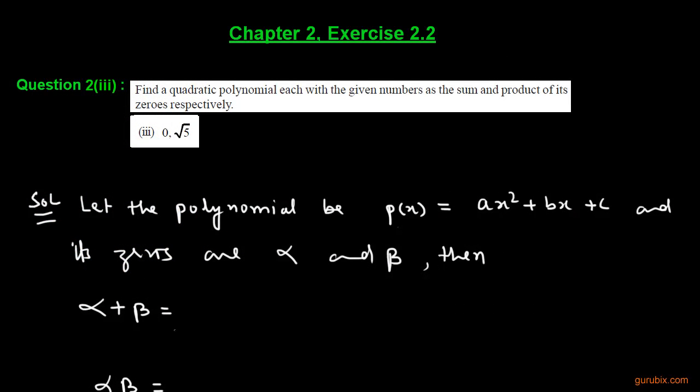Let us solve the third part of question 2 of exercise 2.2. In this question we have to find the quadratic polynomial whose sum of zeros and product of zeros is given to us.